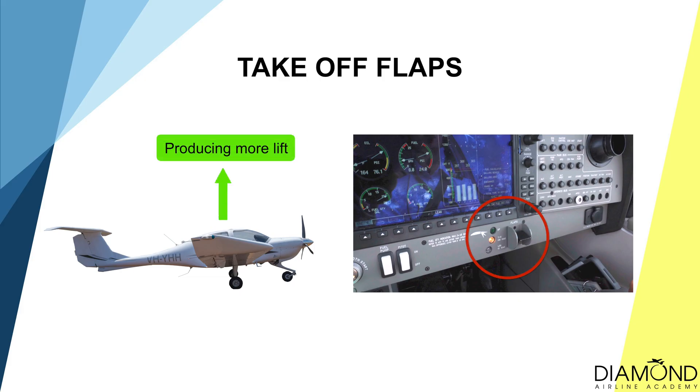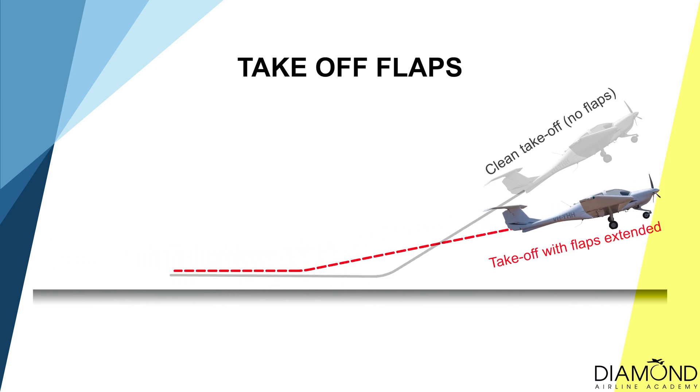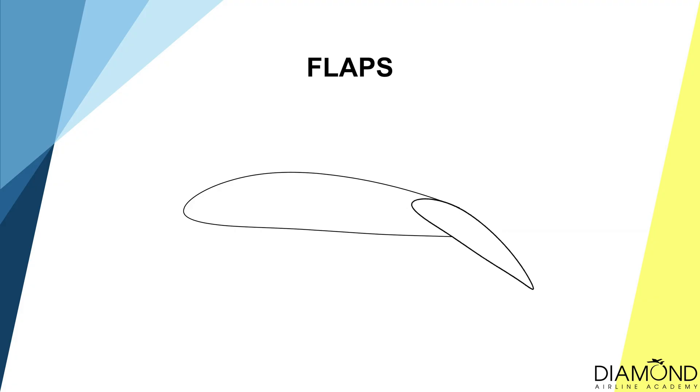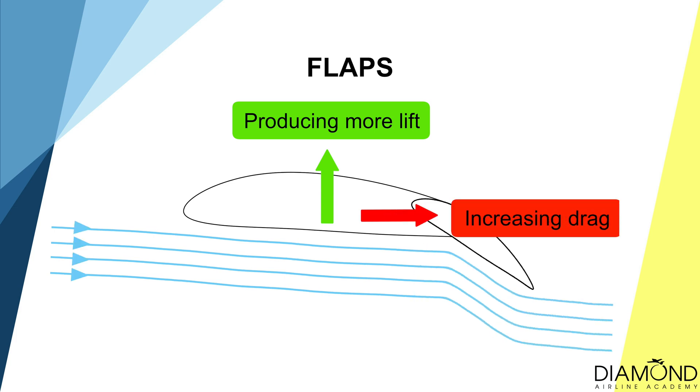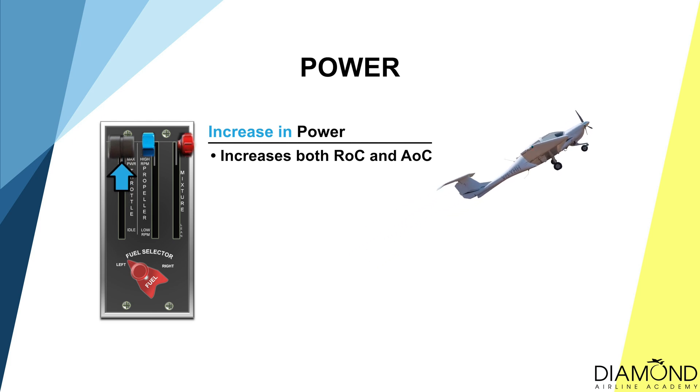The fourth factor is flaps. Normally during takeoff, takeoff flap will be lowered because flap can provide more lift, allowing the aircraft to lift off sooner at a lower speed. However, during a climb, the pilot will retract the flap at a safe height — because flap not only increases lift but also increases drag, so flaps reduce climb performance. The fifth factor is power output from the engine. When using all available power, the aircraft will achieve the best climbing performance. If we're not using full power during a climb, our climb performance will be reduced.